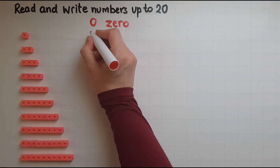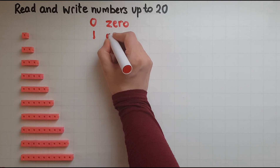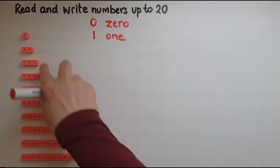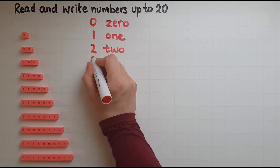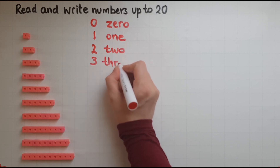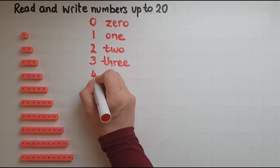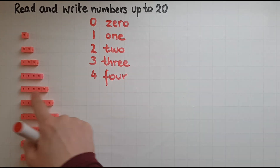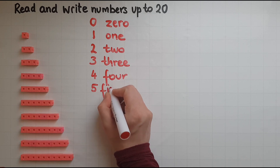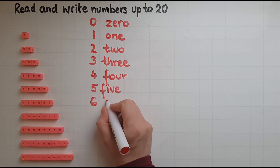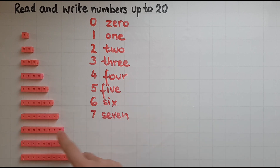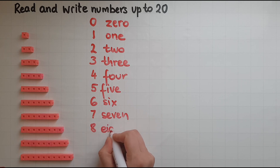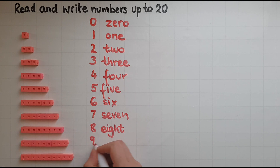In this row I have one cube. Two, three, four, five, six, seven, eight, nine, ten.